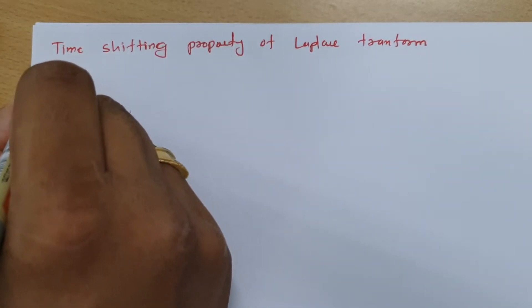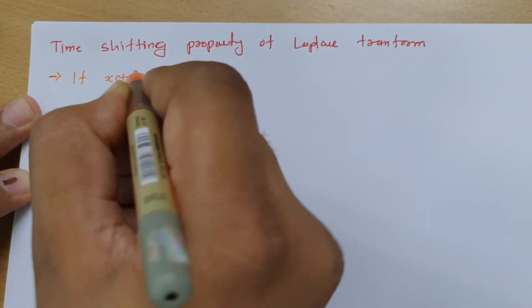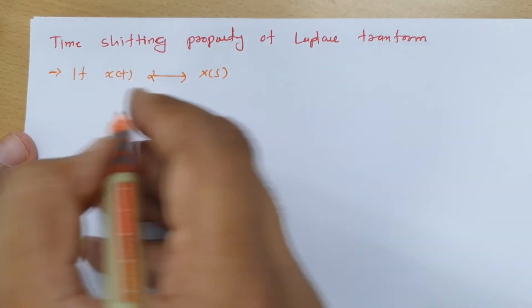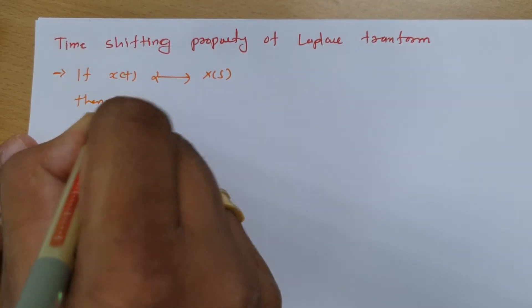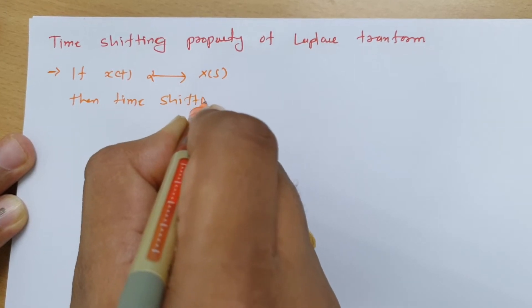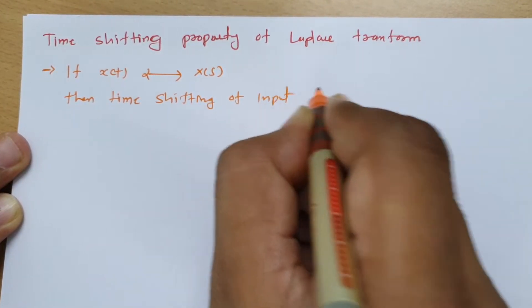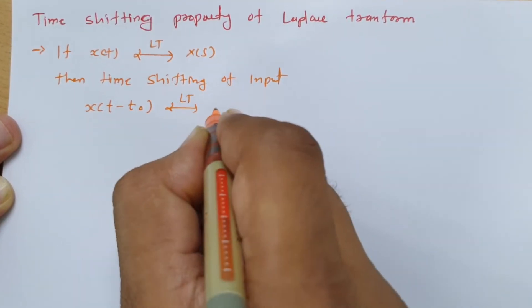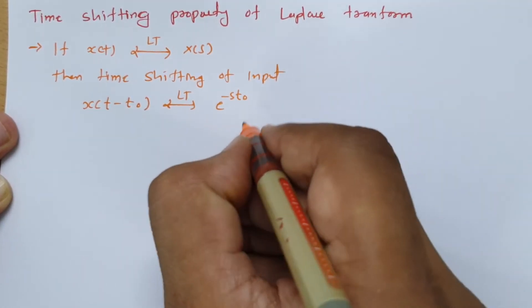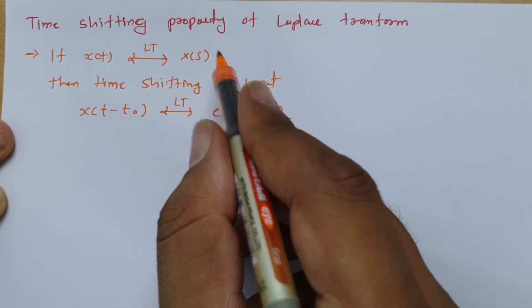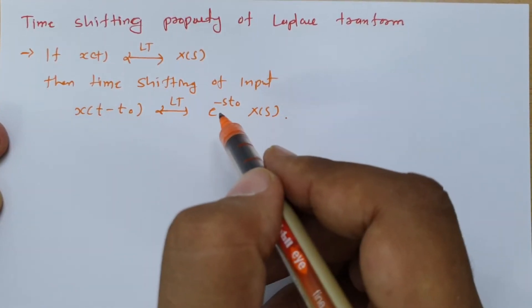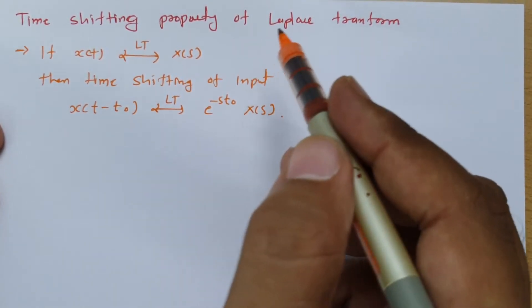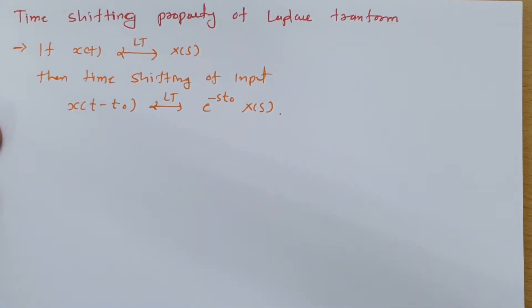Now, if you have signal x(t) and the Laplace transform of that is X(s), then time shifting of the input will result in x(t - t0). The Laplace transform of that will be e to the power minus s*t0 times X(s). So when you have time shifting, you multiply that shifted version with e to the power minus s*t0 times X(s). That is the time shifting property of Laplace transform.